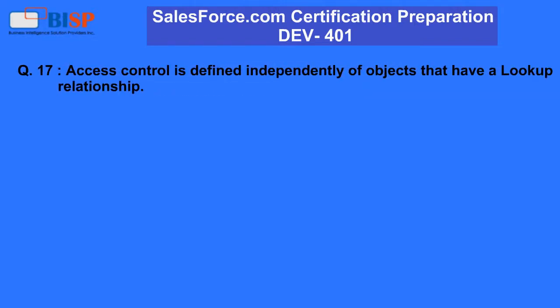Question 17: Access control is defined independently of objects that have a lookup relationship. A. False. B. True.